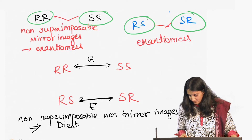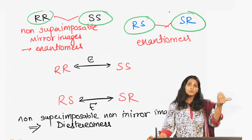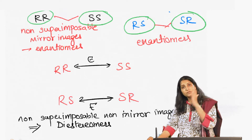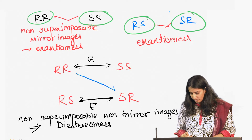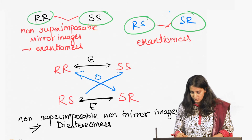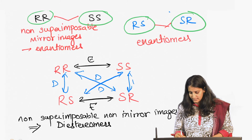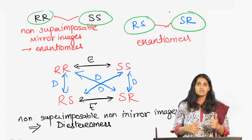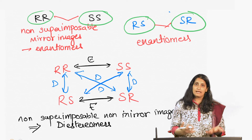Non-superimposable non-mirror images are thus diastereomers of each other. This is a new term. Enantiomers we learned previously; diastereomers are non-superimposable non-mirror images. For example, RR and SR are diastereomers, SS and RS are diastereomers, RR and RS is a diastereomer pair, and SS and SR is a pair of diastereomers. For a molecule with two stereocenters, you have two pairs of enantiomers and four pairs of diastereomers.